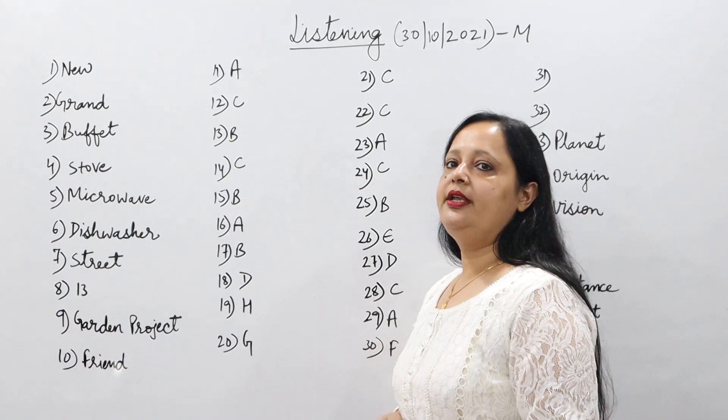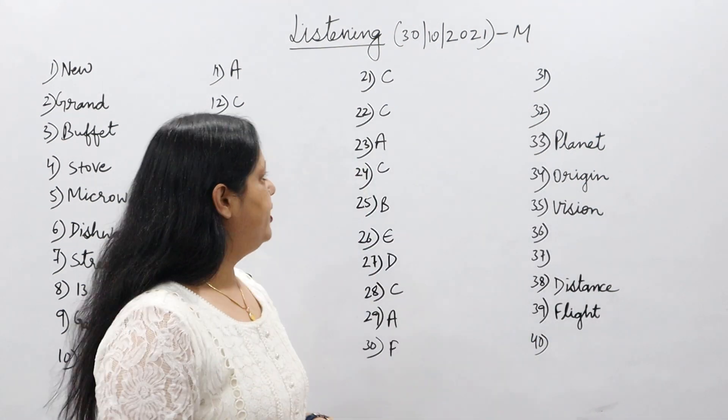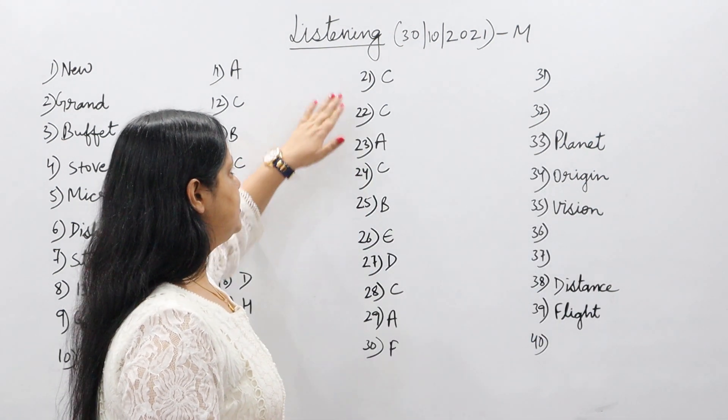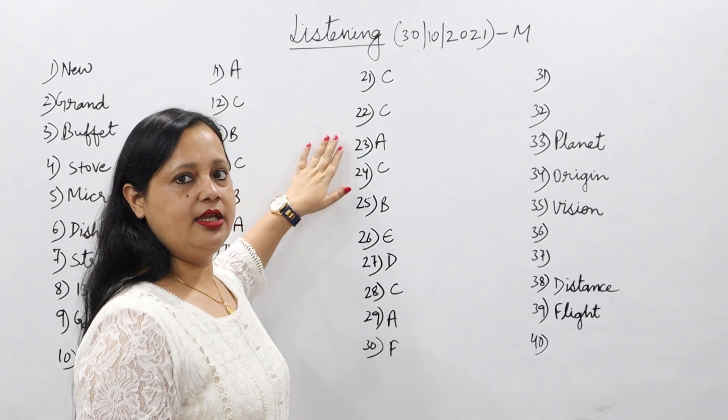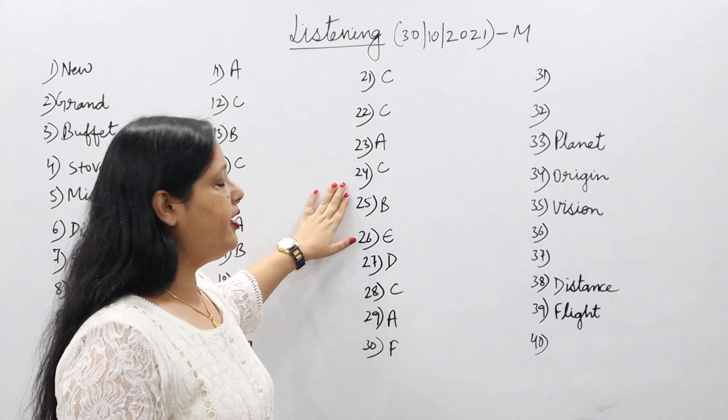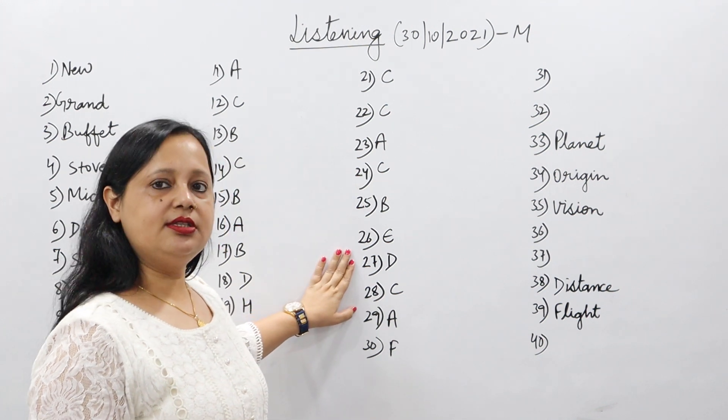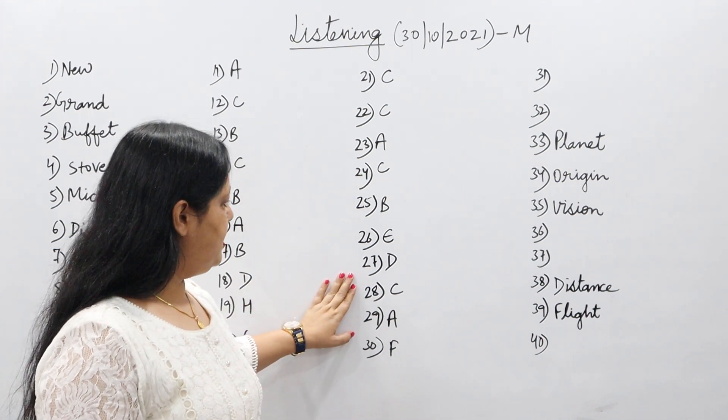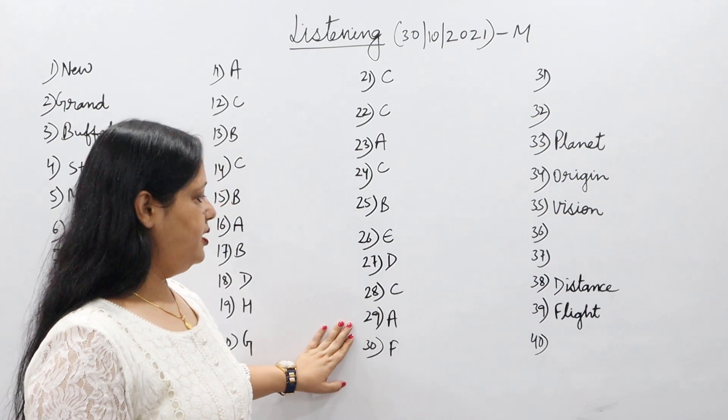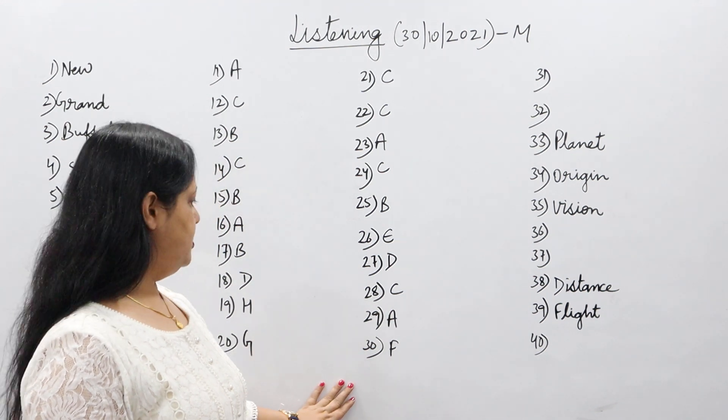Now let's talk about Part 3. Twenty-first is C, twenty-second is C, twenty-third A, twenty-fourth C, twenty-fifth B, twenty-sixth E, twenty-seventh D, twenty-eighth C, twenty-ninth A, thirtieth F.